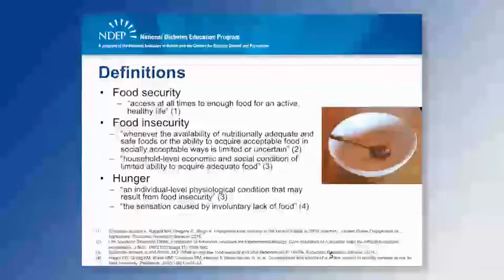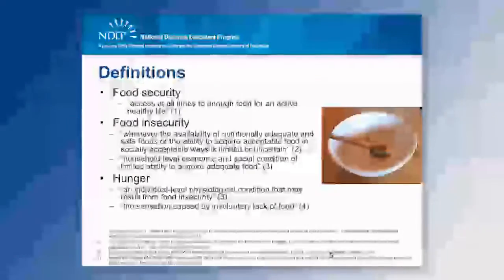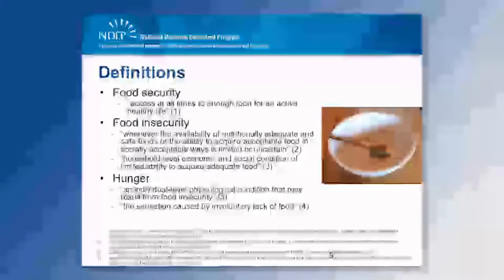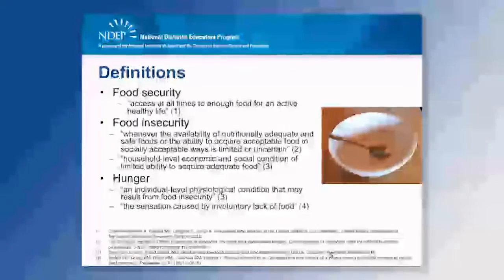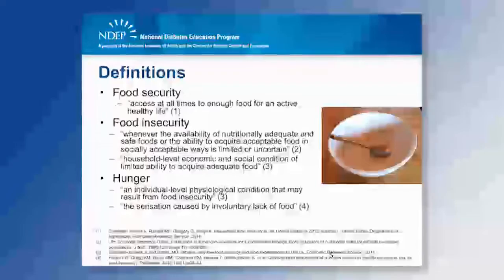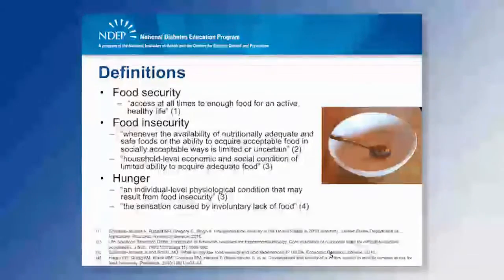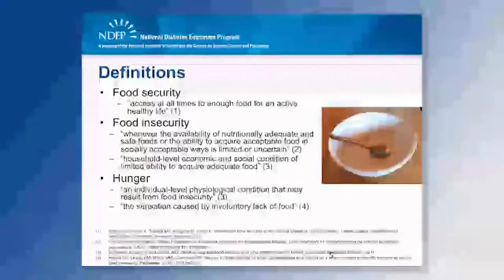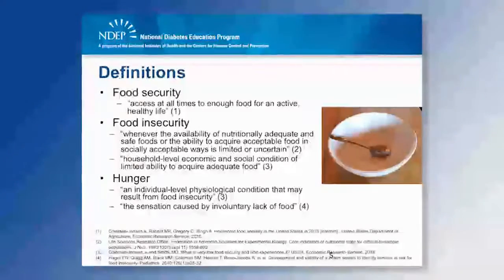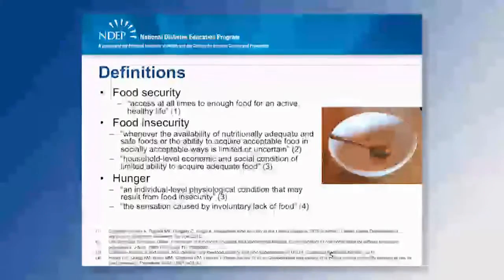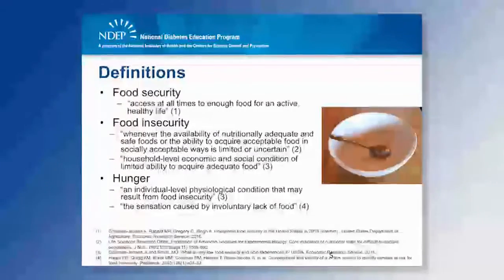The United States Department of Agriculture defines food security as access at all times to enough food for an active and healthy life. Food insecurity, on the other hand, is the household-level economic and social condition of limited ability to acquire adequate food. Another commonly used definition of food insecurity is whenever the availability of nutritionally adequate and safe foods, or the ability to acquire acceptable food in socially acceptable ways, is limited or uncertain. Food insecurity is different from hunger. Hunger may result from food insecurity, but it is an individual-level physiological condition, which may be defined as a sensation caused by involuntary lack of food.